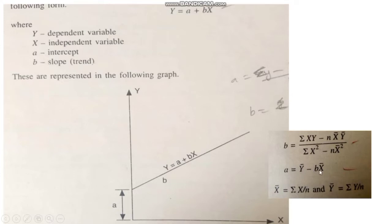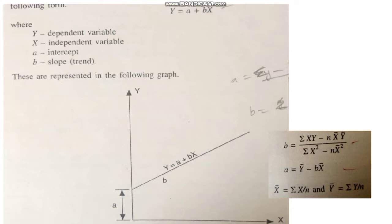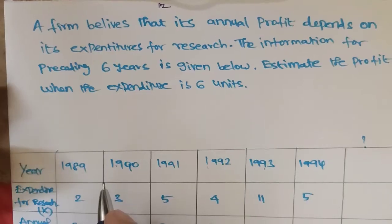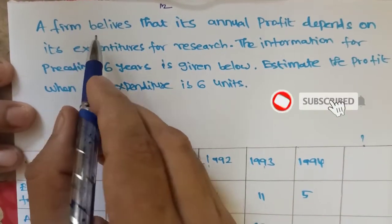For calculating the intercept and slope: a = ȳ − b·x̄, where x̄ = Σx/n and ȳ = Σy/n. To determine b, use: b = (Σxy − n·x̄·ȳ) / (Σx² − n·x̄²). Substitute x and y values to determine b, then substitute b, ȳ, and x̄ to estimate a. Finally, substitute a and b into y = a + bx to estimate the demand forecast.